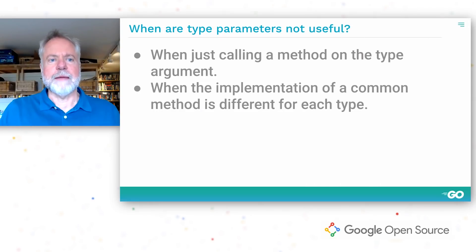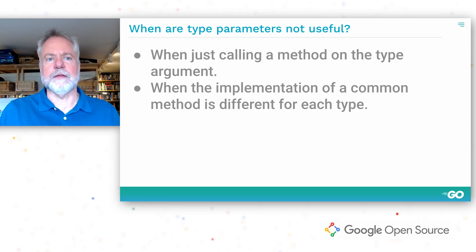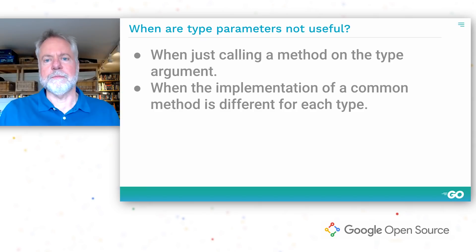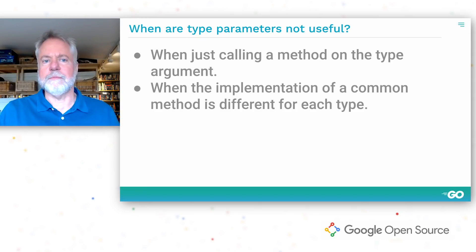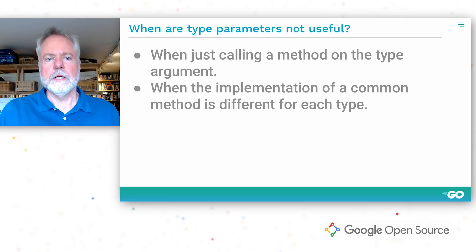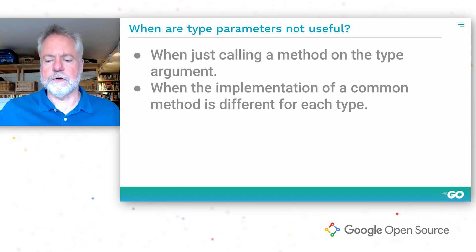Going back to the choice between type parameters and interface types: when there's a common method used by different types, consider the implementation of that method. If the implementation is the same for all types, use a type parameter. Inversely, if the implementation is different for each type, then use different methods — don't use a type parameter. For example, the implementation of read from a file is nothing like the implementation of read from a random number generator, so we write two different read methods and neither should use a type parameter.